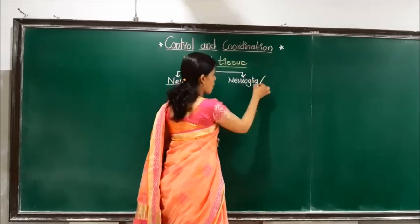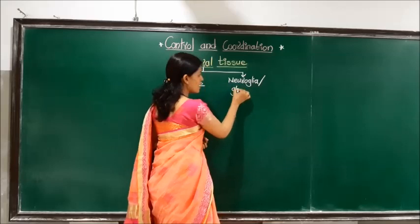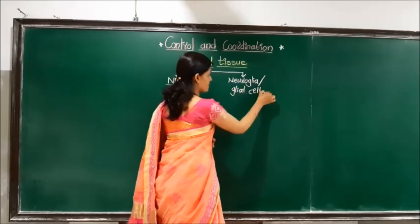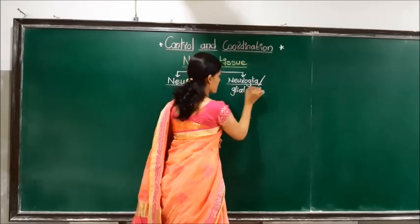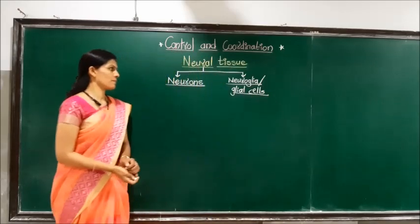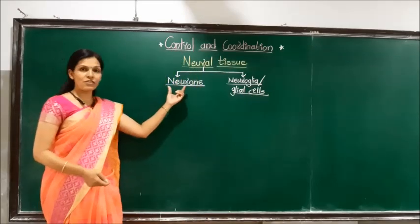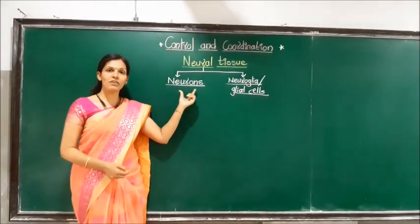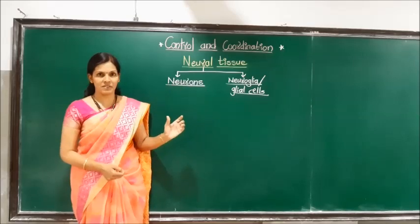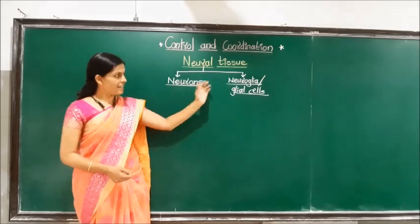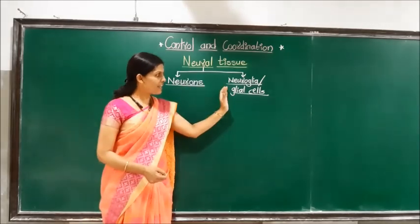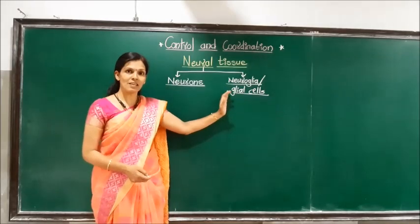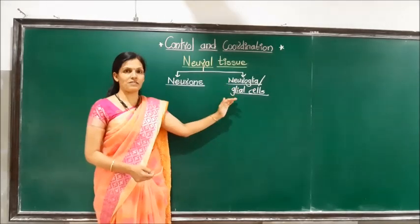Neuroglia, also called glial cells, are supportive cells which support the nervous system. Neurons are the structural and functional unit of nerve fibers.